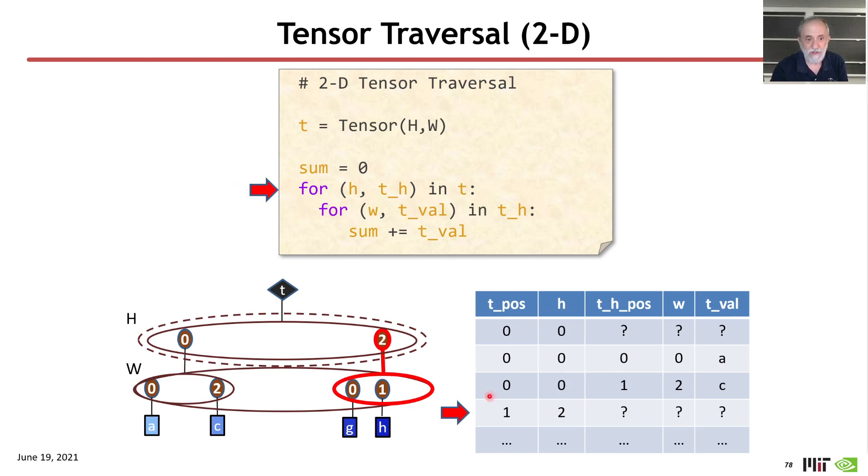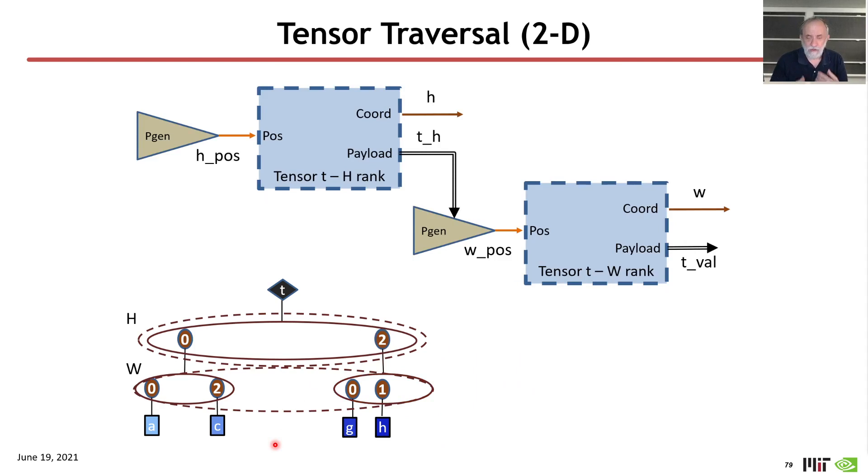When I go back to the top loop, I'm now at position one in the top fiber, it's coordinate two, and I'm pointing at the next fiber, continue on. And just like we had before, there is a corresponding hardware associated with that loop nest representation.